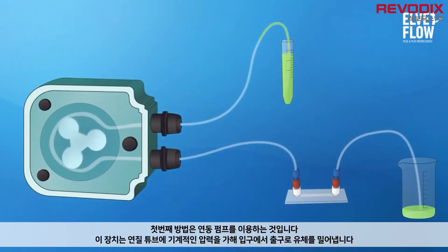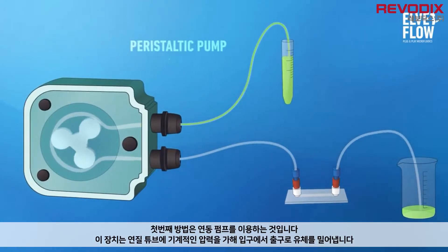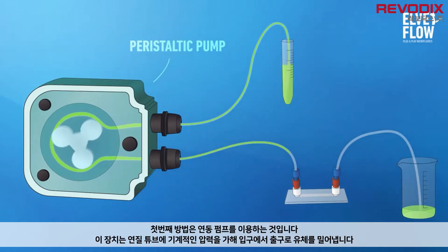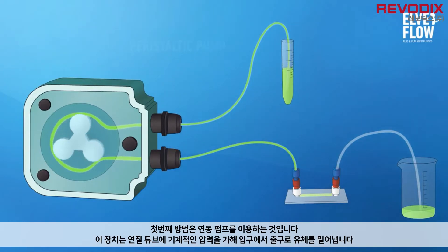The first method uses a peristaltic pump. This instrument applies a mechanical action onto a flexible tube to push the liquid flow from the tubing entrance to the exit.